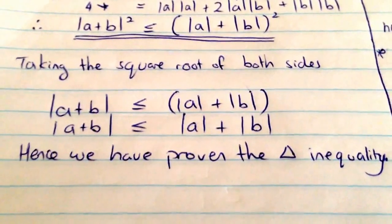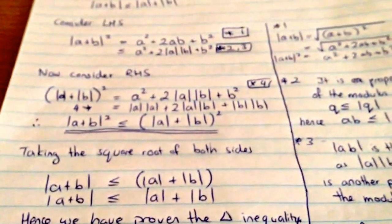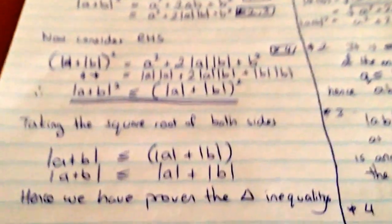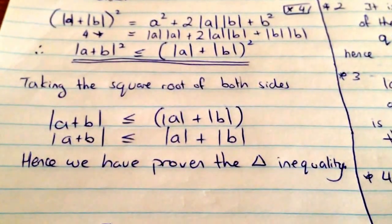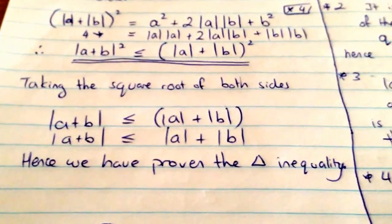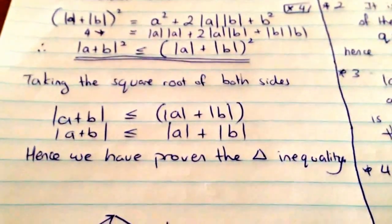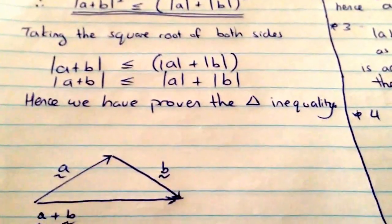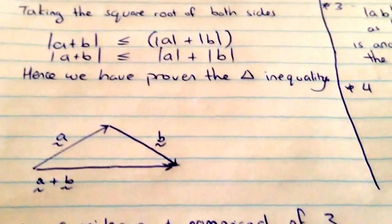So hopefully you can follow along with this. Maybe just re-watch the video again if you need help. The main thing is understanding the modulus properties. Once you've got that, it should just flow out quite naturally. And I really like this proof because it's quite straightforward, quite simple. And so essentially we've proven the triangle inequality.